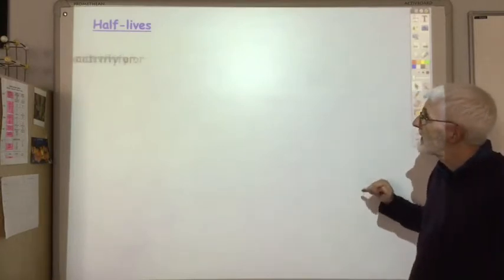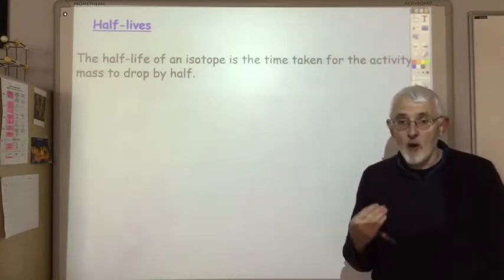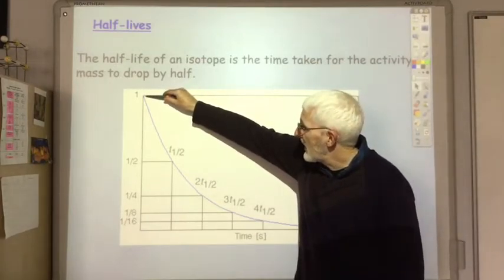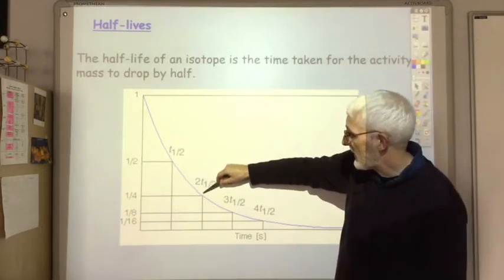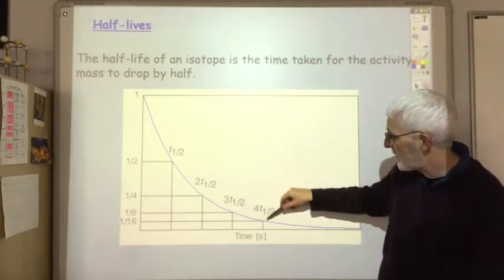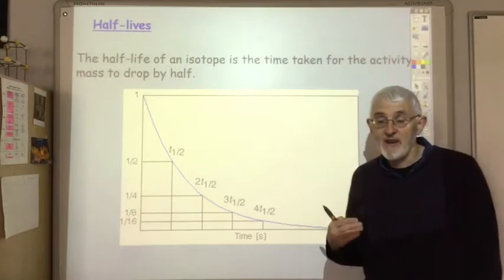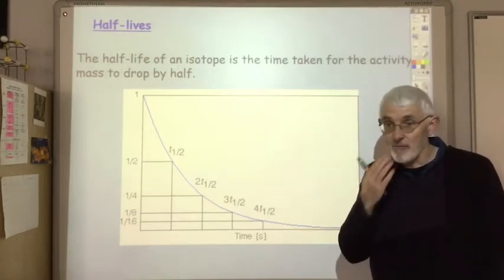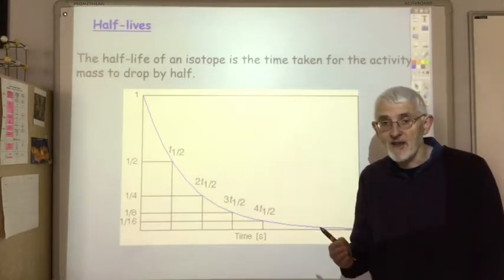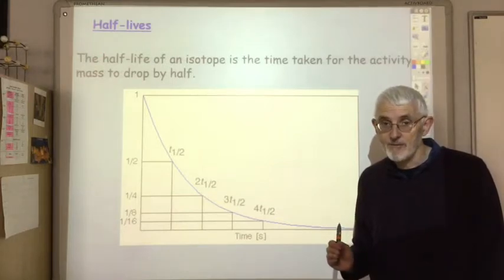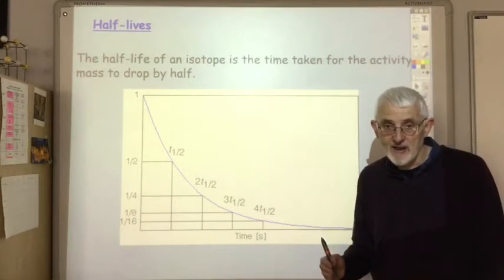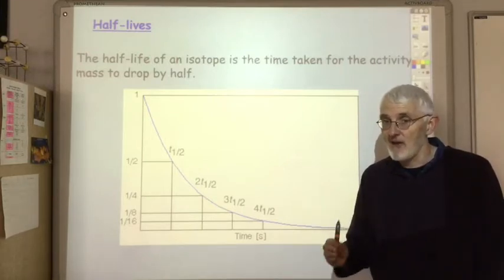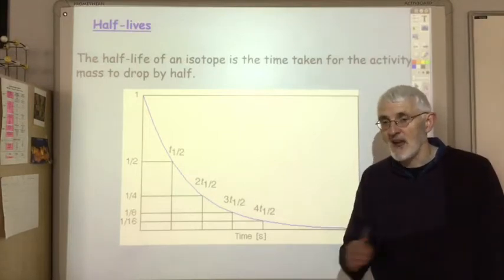The next thing to consider is half-lives. The half-life of a radioisotope is the time taken for the activity, or its mass, to drop by a half. So if you start off with one gram of a radioisotope: after one half-life you have half a gram, after two half-lives a quarter of a gram, three half-lives an eighth, four half-lives a sixteenth. The actual half-life of any radioisotope can vary enormously — some radioisotopes have half-lives of microseconds, some have half-lives of billions of years. Importantly, nothing changes the half-life — increasing the temperature does not increase the rate of radioactive decay, and it doesn't matter if the radioisotope is in a solid, a liquid, or a gas.